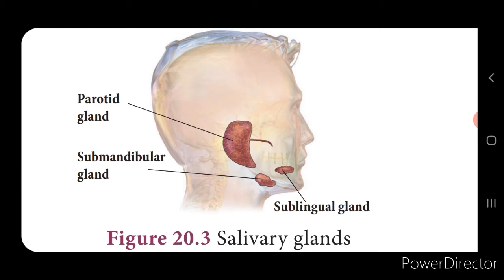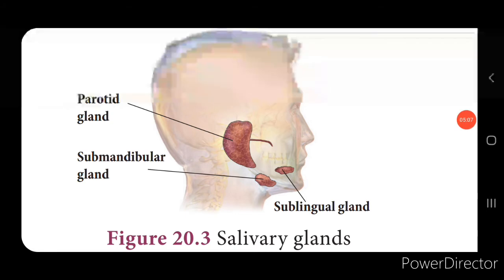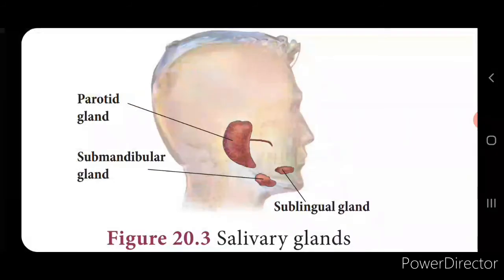The tongue is a muscular and sensory organ that helps in mixing food with saliva. There are taste buds on the tongue that help recognize the taste of food. The pharynx is a muscular cavity that connects the mouth to the esophagus — it is the pathway of food from the mouth to the esophagus. The esophagus is also called the food pipe; it is a muscular membranous canal about 22 centimeters in length. It helps in the movement of food from the pharynx to the stomach through wave-like movement — a rhythmic contraction and relaxation of the muscular walls of the alimentary canal.